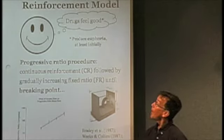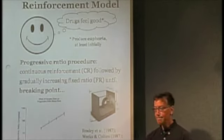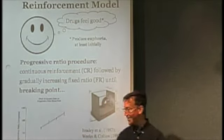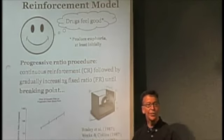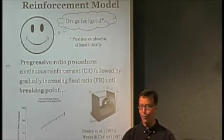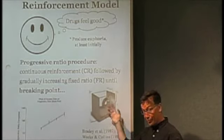And the positive reinforcement model is often explored using what's called this progressive ratio procedure. This is actually an animal model of determining which drugs are capable of producing the most euphoria and the most positive reinforcement.